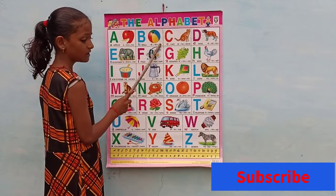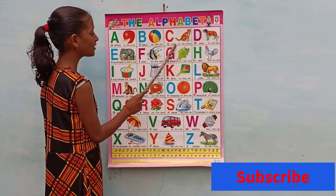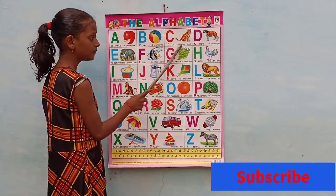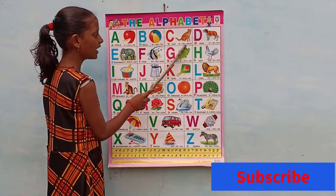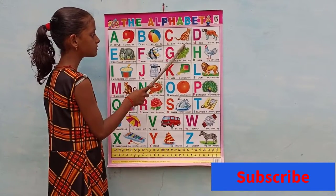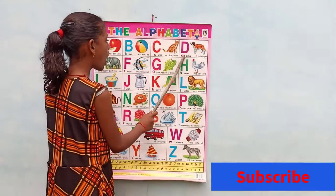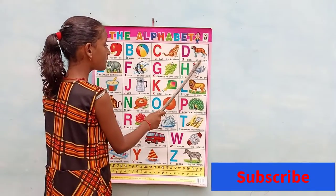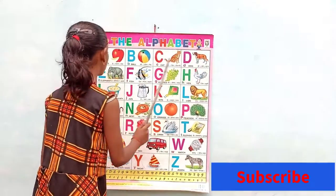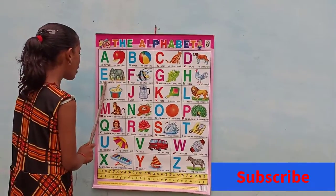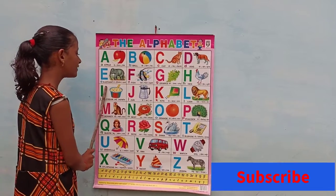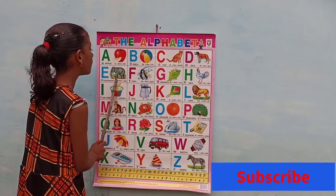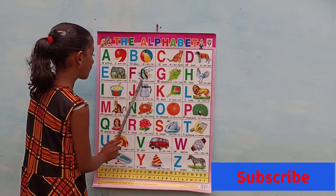C for Carrot. D for Dog. Dog means Putta. E for Elephant. Elephant means Hearty.